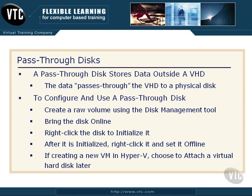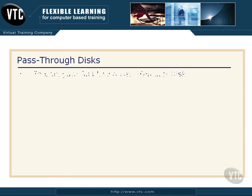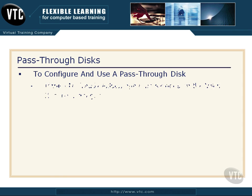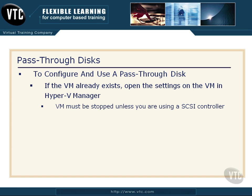If I'm creating a new virtual machine in Hyper-V, I want to tell Hyper-V not to worry about the hard disk — I'll choose to attach a hard disk later. If the VM already exists, I simply open the settings on the VM in Hyper-V Manager. Keep in mind, the VM has to be stopped to change these settings unless I'm using a SCSI controller. Keep that in mind for the exam.